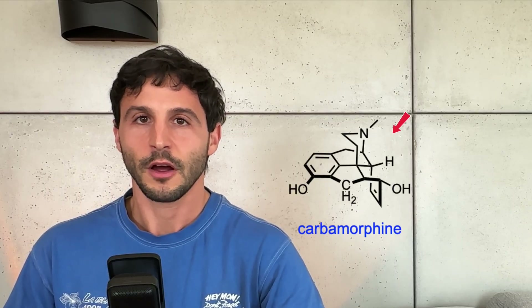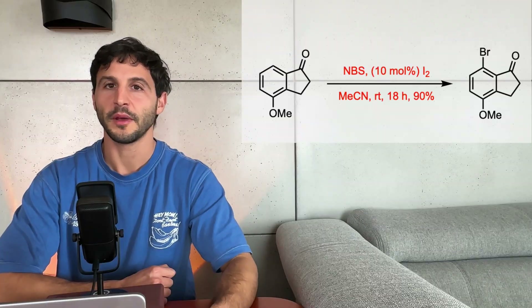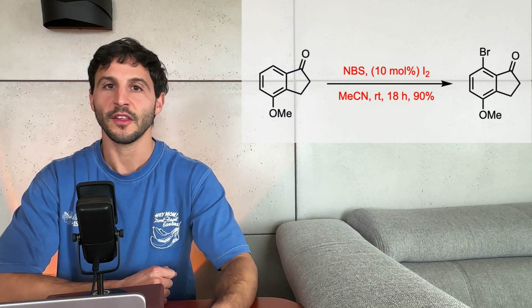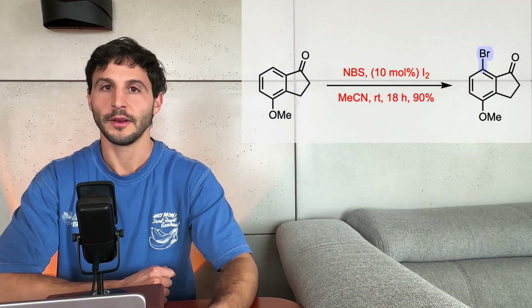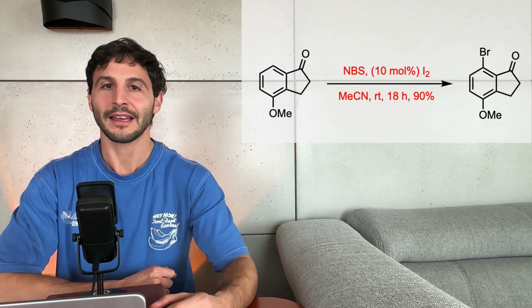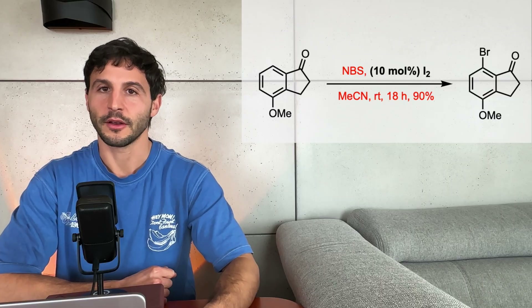Hello everyone, I'm Luis, and in this video I'm going to talk about the synthesis of carbomorphine. The synthesis begins with commercially available indanone, which is site-selectively brominated using N-bromosuccinimide and a catalytic amount of iodine. The para-methoxy group likely directs the bromination to the observed position.